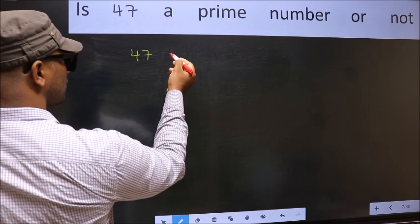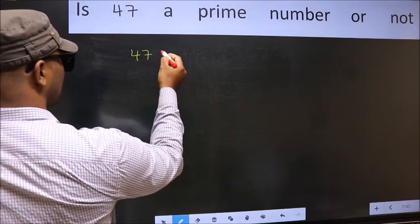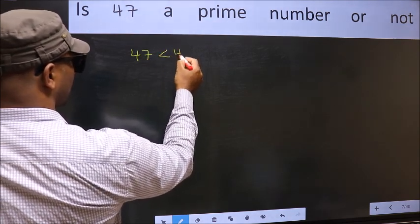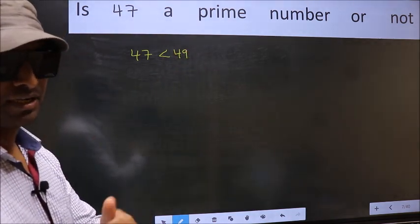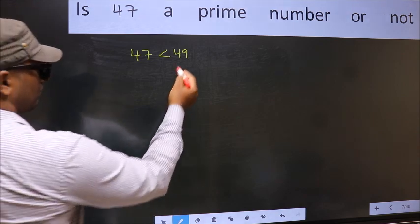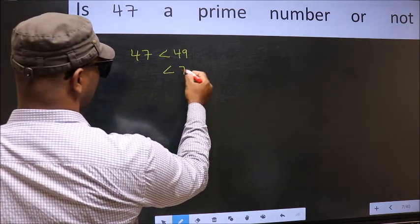This is close to which perfect square number? This is close to 49. This is your step 1. Next, 49 is nothing but 7 square.